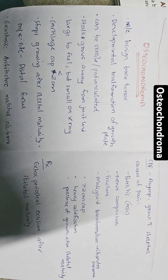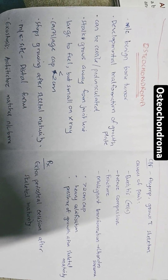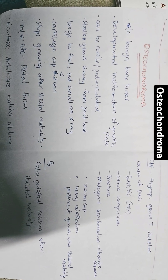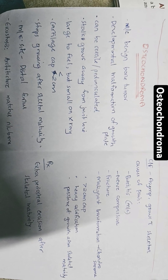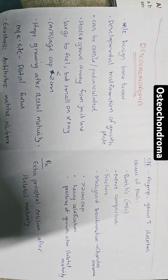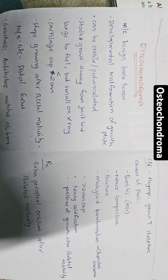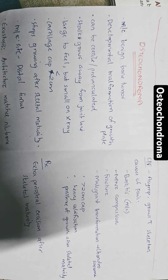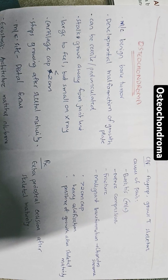Osteochondroma is the most common benign bone tumor. It is not a true neoplasm since its growth stops with cessation of growth at the epiphyseal plate. It is a result of an aberration of the growth plate where a few cells from the plate grow centrifugally as a separate lump of bone.